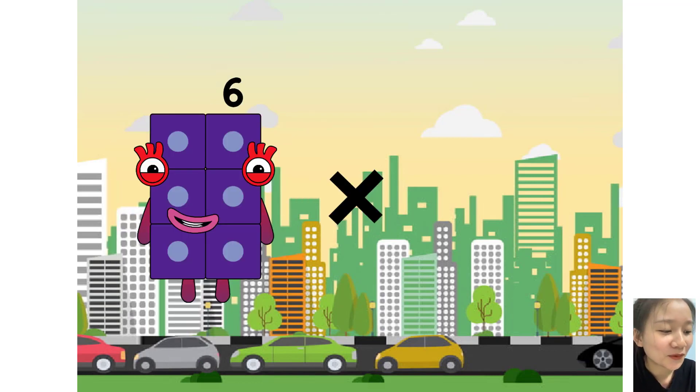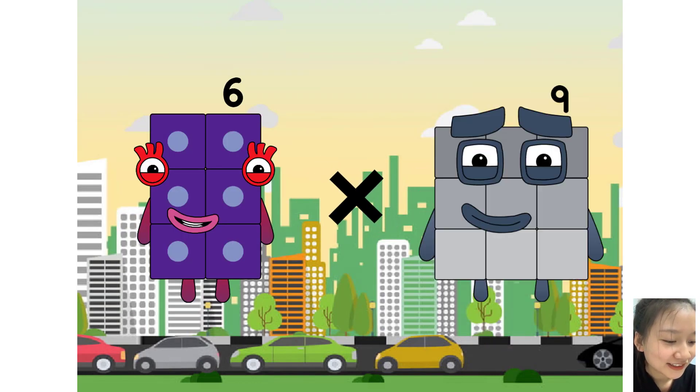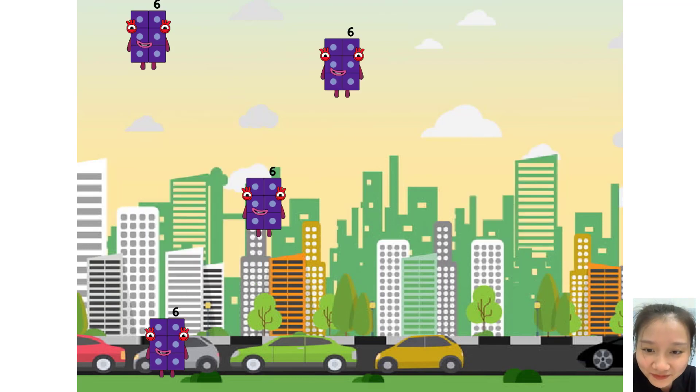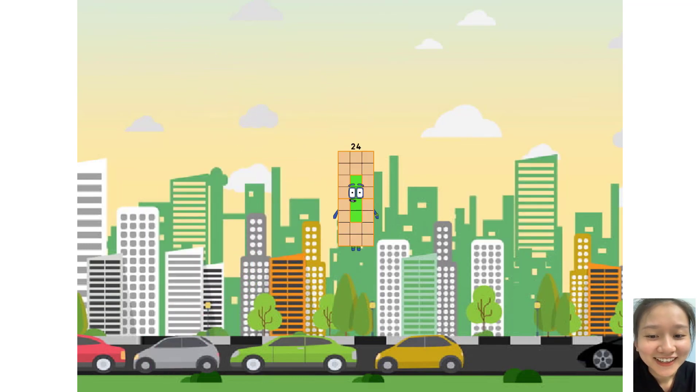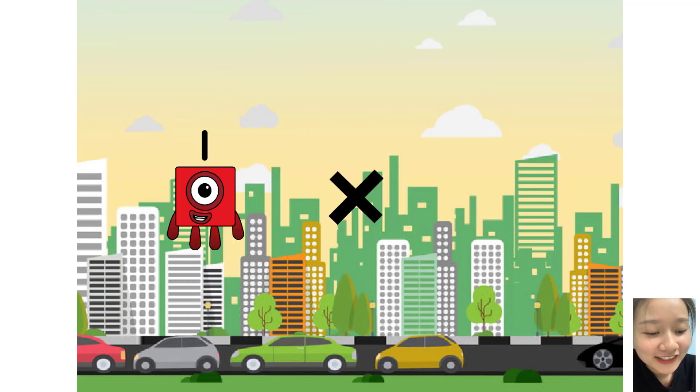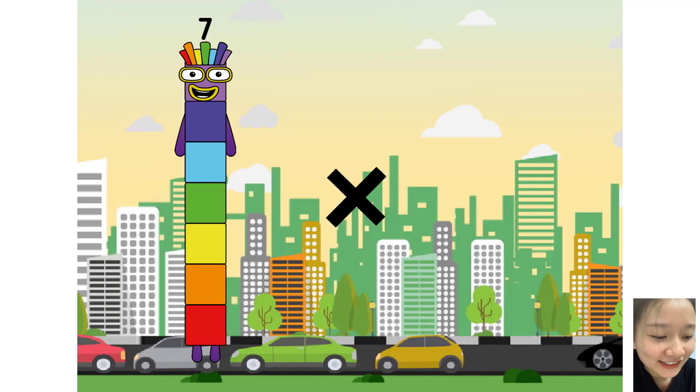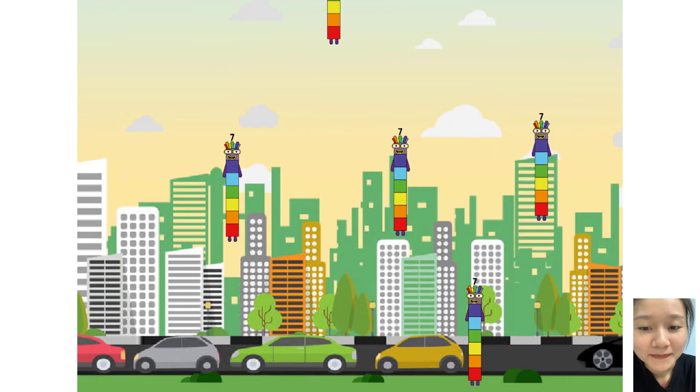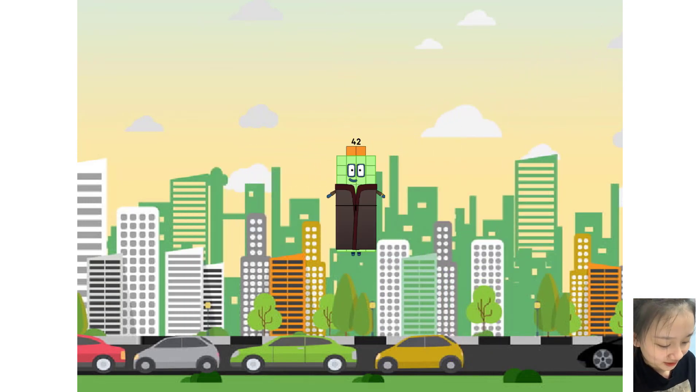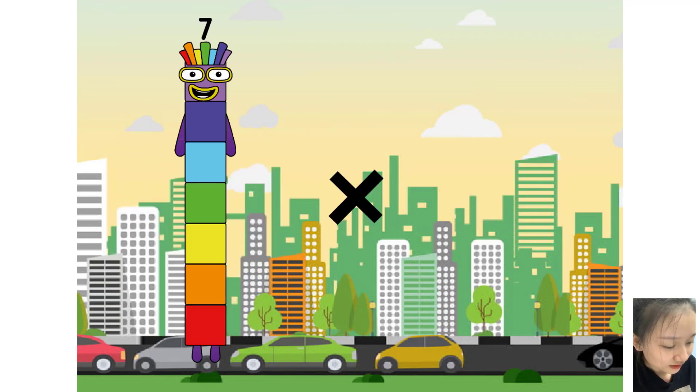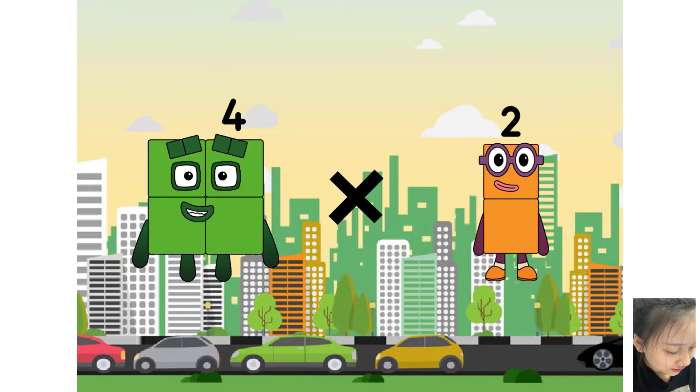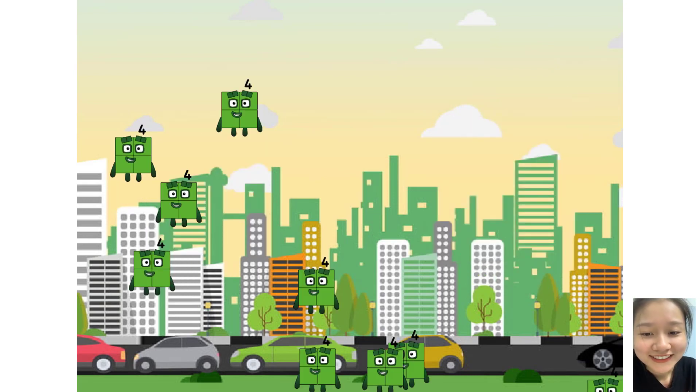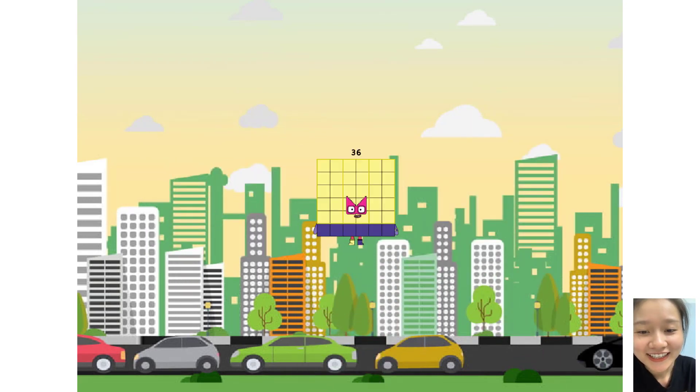Six times four equals twenty-four. Seven times six equals forty-two. Four times nine equals thirty-six.